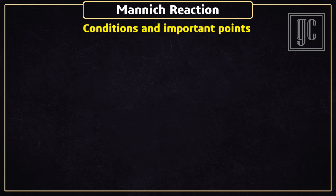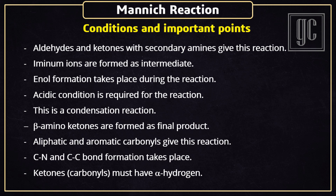The conditions and important points for this reaction are: aldehydes and ketones with secondary amines give this reaction; iminium ions are formed as intermediates; enol formation takes place during the reaction; acidic conditions are required; this is a condensation reaction and a water molecule is removed overall; beta-amino ketones are formed as the final product; aliphatic and aromatic carbonyls give this reaction; carbon-nitrogen and carbon-carbon bond formation takes place; and ketones must have alpha-hydrogen.